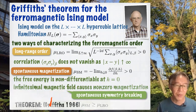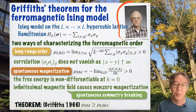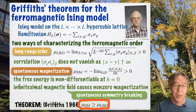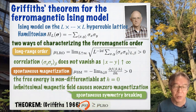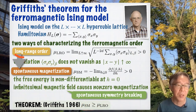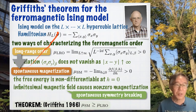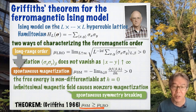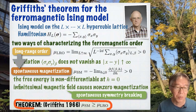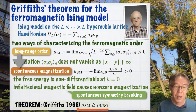The celebrated Griffiths theorem, proved in 1966 by Professor Robert Griffiths, says that these two order parameters are related by this inequality. This means that if mu long-range order is positive, then mu_sm must also be positive — this characterization always implies that one. This is a pioneering work, and this inequality has been extended to many systems, including quantum systems.